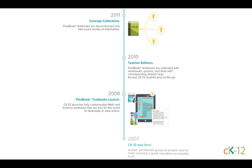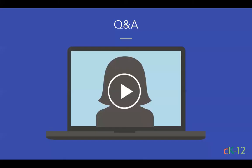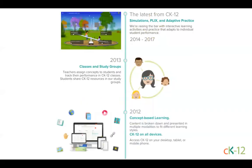In 2008, FlexBooks launched with fully customizable math and science textbooks free for the world to download or view online. In 2010, CK-12 added teacher editions collections that offered extensions like workbooks, quizzes, and tests with corresponding answer keys. In 2011, our concept collections were introduced — unlike our original FlexBooks that offer full lesson plans following the structure of a more traditional textbook, these concept collections deconstruct the books into bite-sized chunks of information, similar to how teachers want to teach and how students want to learn. In 2012, we continued to break content down into individual concepts and present them in multiple modalities to fit different learning styles, and that was the year CK-12 was available on desktops, tablets, and mobile phones. In 2013, classes and study groups were created to encourage discussion and collaboration, allowing students to share CK-12 resources and for teachers to create class assignments.